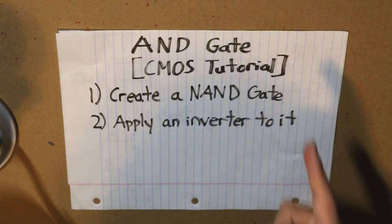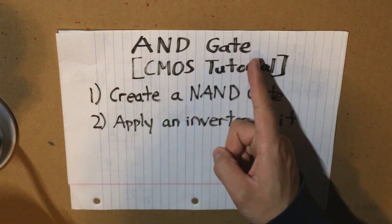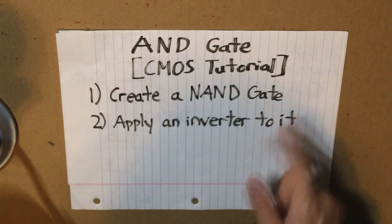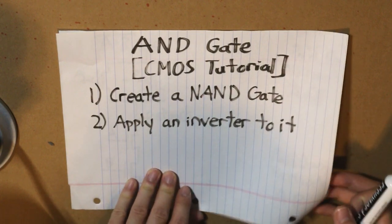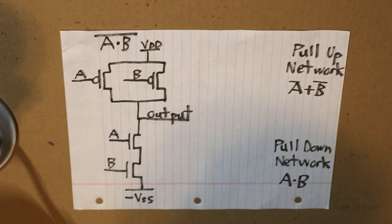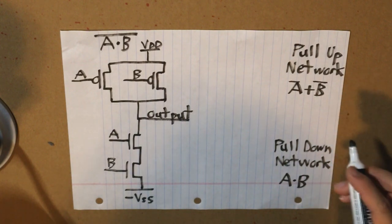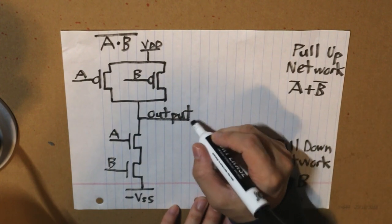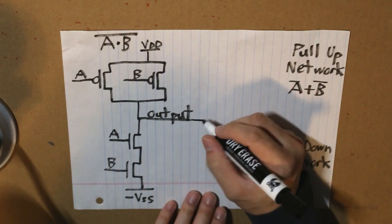That is the step on how to design an AND gate using CMOS. So let's draw our inverter.